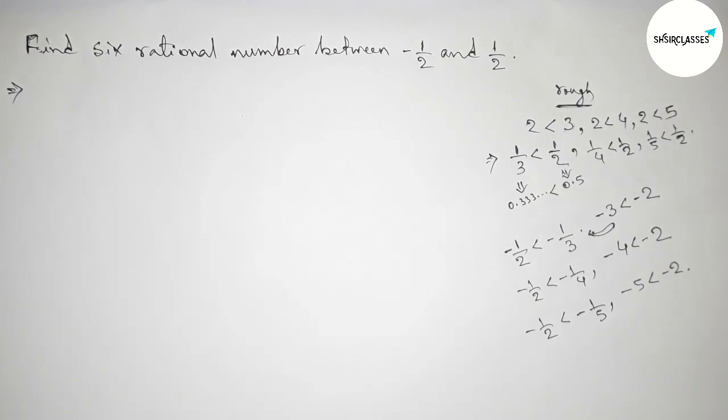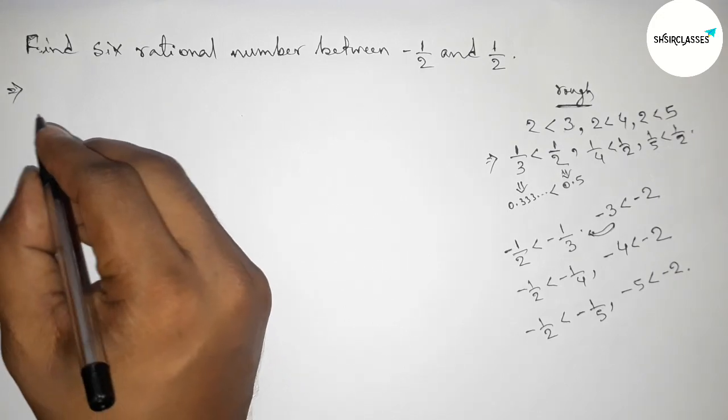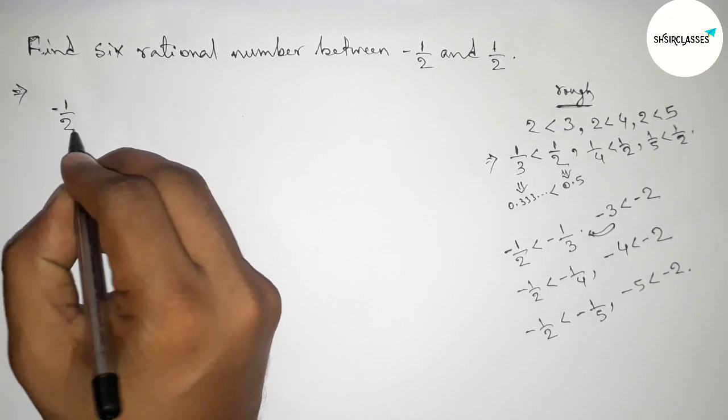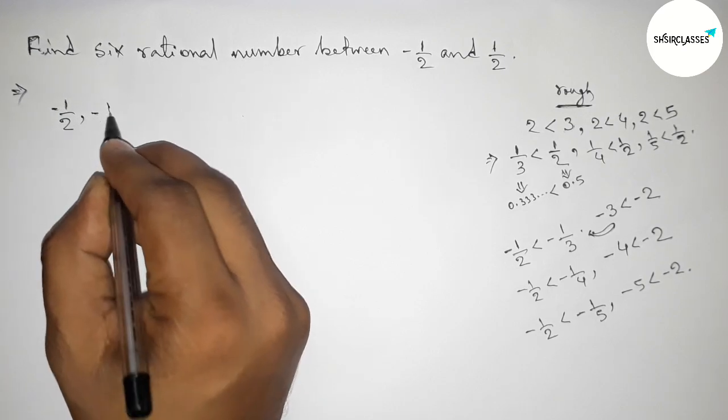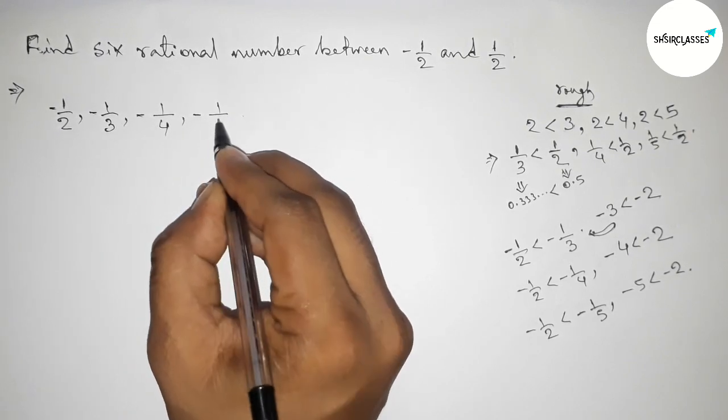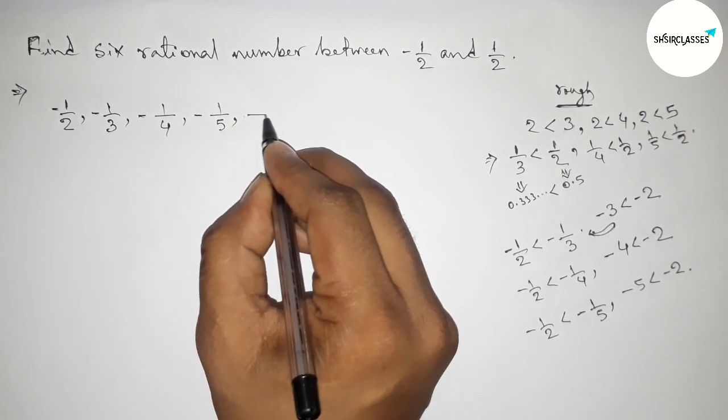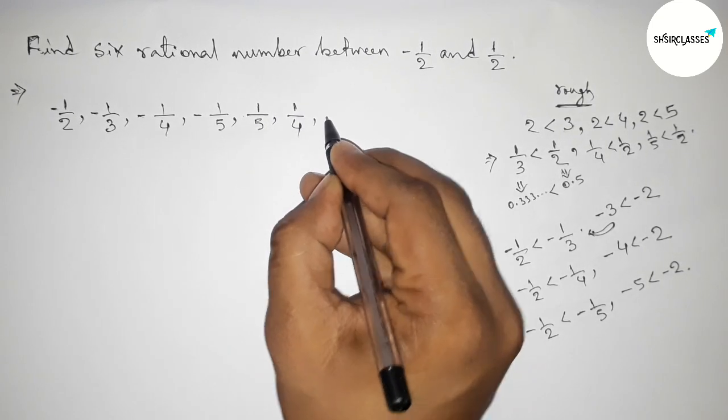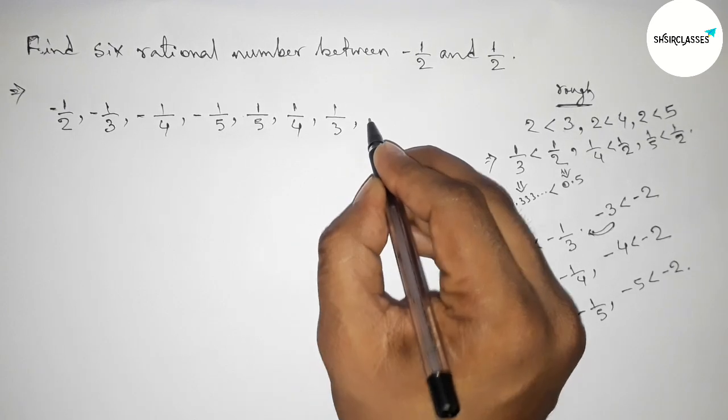All the rational numbers between minus 1 by 2 and 1 by 2: first minus 1 by 2, then minus 1 by 3, then minus 1 by 4, then minus 1 by 5, then 1 by 5, 1 by 4, 1 by 3, and 1 by 2.